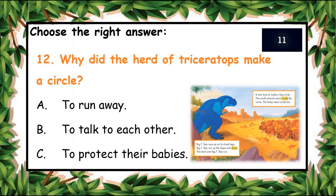The next question: why did the herd of Triceratops make a circle? A: To run away, B: To talk to each other, C: To protect their babies. You have ten seconds to answer. C: To protect their babies. Let's see — yes, C is the right answer!